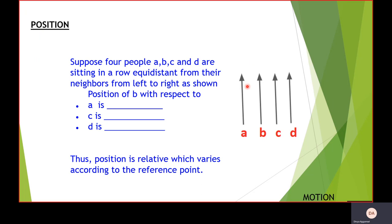Suppose four people A, B, C and D are sitting in a row equidistant from their neighbors from left to right as shown. So left is here and right is here.